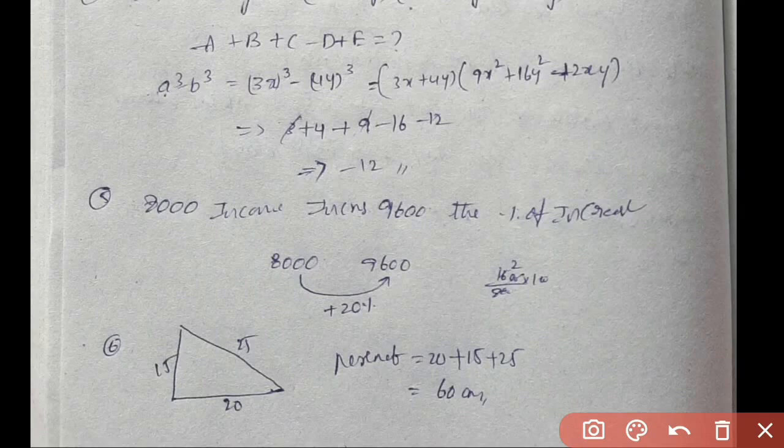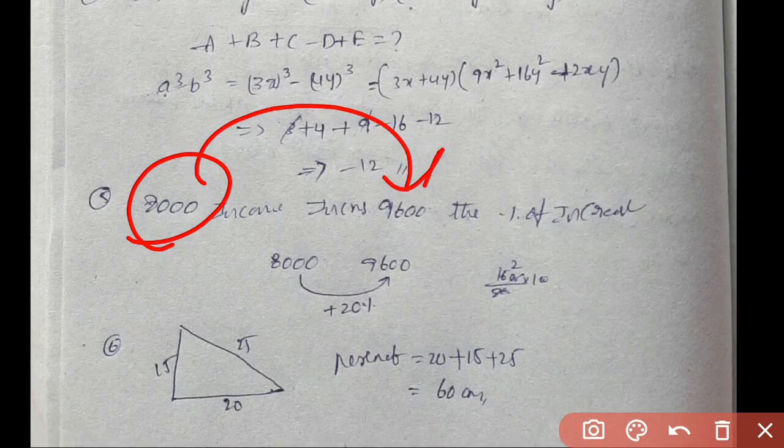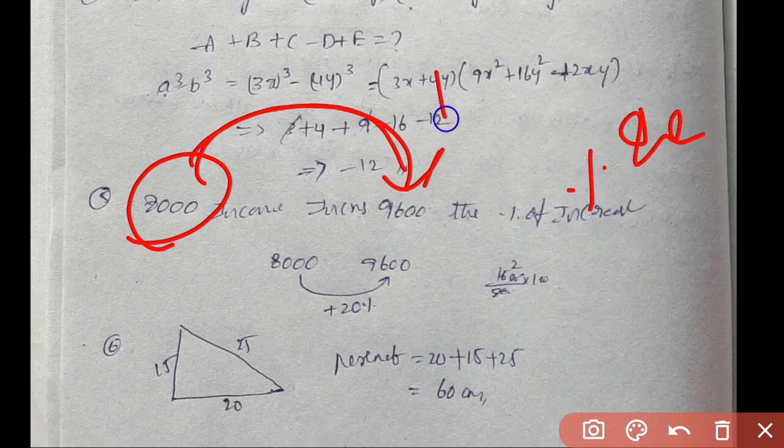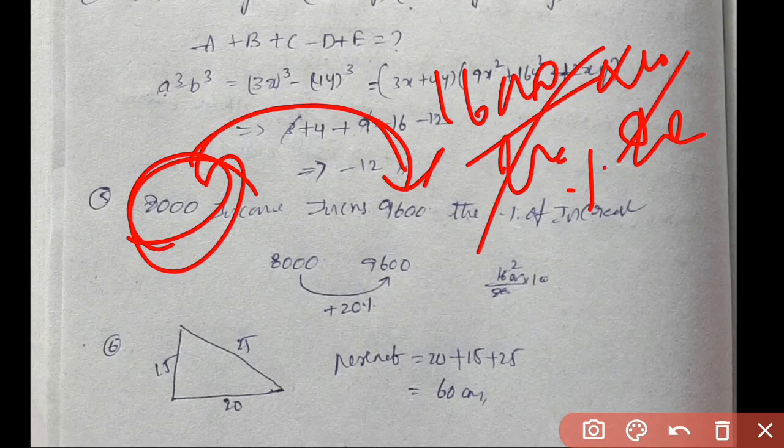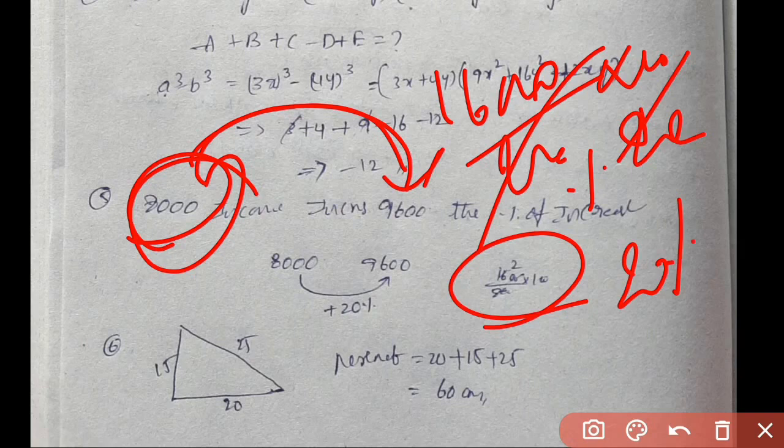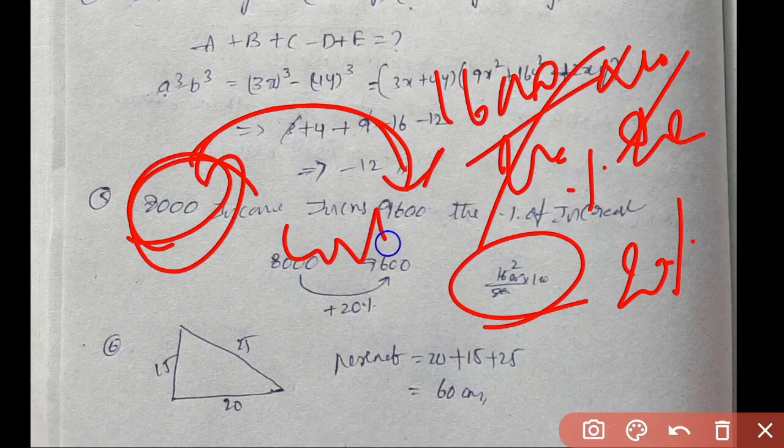Income is $8,000, increases to $9,600. Percentage of increase? Increase is $1,600. 1600 over 8000, calculate: 20 percent. Simple thing. Mathematics a little difficult, general awareness equals current affairs.